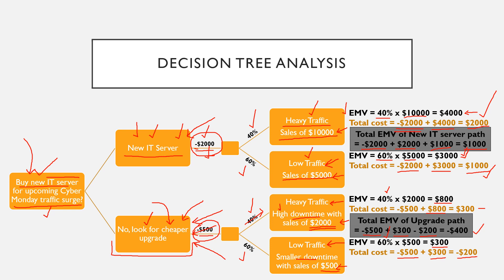Now calculate the total EMV for each path. For the new IT server: minus $2,000 (server cost) plus $2,000 (best case) plus $1,000 (worst case) equals a total EMV of $1,000. For the cheap upgrade path: minus $500 (upgrade cost) plus $300 (best case) minus $200 (worst case) equals minus $400. Since $1,000 is better than minus $400, you should buy the new IT server. That is how decision tree analysis helps you make decisions.